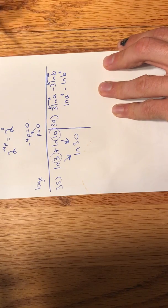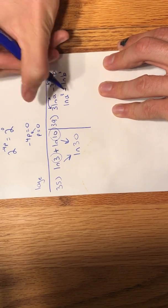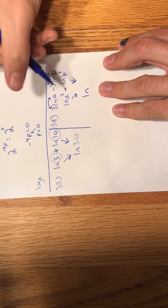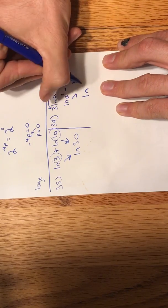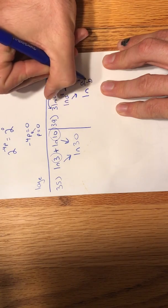And then we would go ahead and apply that quotient rule, but in reverse. We would condense this into one natural log and take the quotient of the two arguments that are there. So we'd have the natural log of A cubed divided by B cubed.